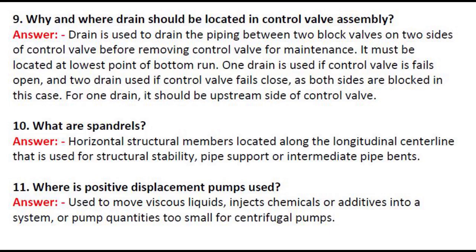Question 9: Why and where should a drain be located in a control valve assembly? Answer: A drain is used to drain the piping between two block valves on both sides of the control valve before removing it for maintenance. It must be located at the lowest point of the bottom run. One drain is used if the control valve fails open, and two drains if it fails closed. For one drain, it should be on the upstream side of the control valve.